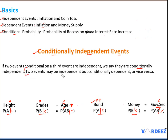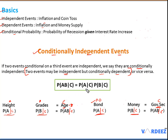Note that two events may be independent at first but can also become conditionally dependent when a third event is added. To determine whether two conditional probabilities are independent or dependent, there is a formula: if the conditional probability of A given C, multiplied by the conditional probability of B given C, equals the joint probability of A and B given C, then the events are conditionally independent. If multiplying those two conditional probabilities does not equal the joint probability, then they are not conditionally independent.